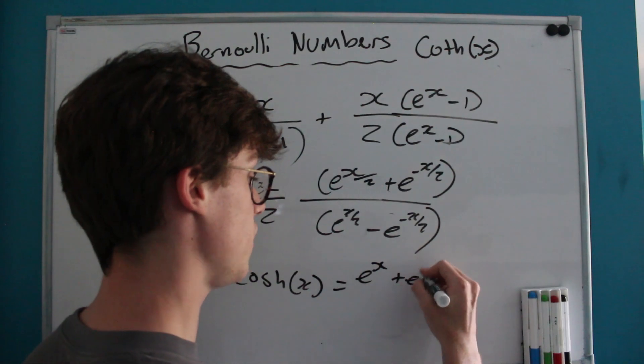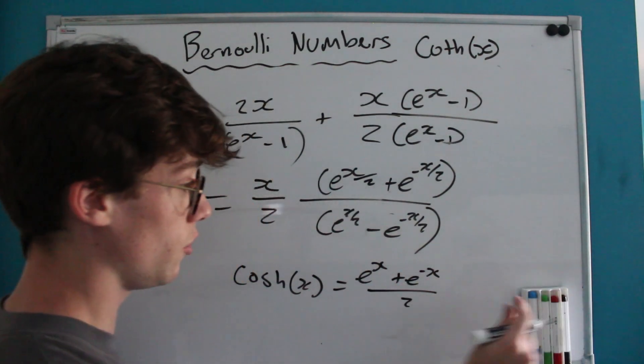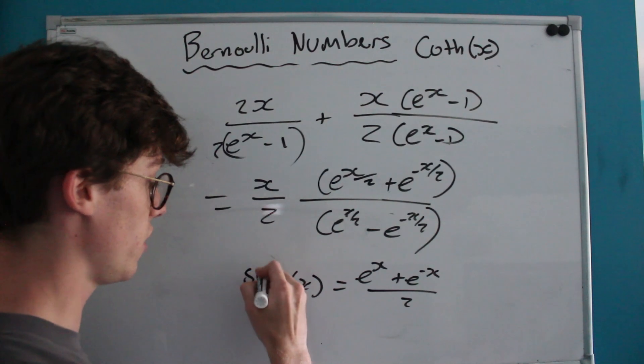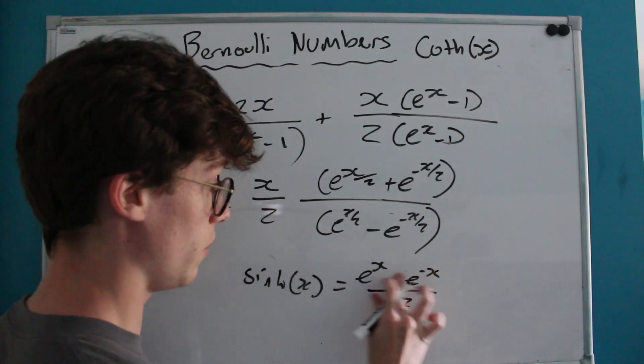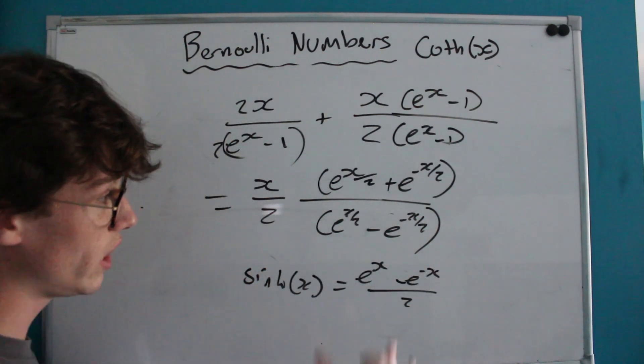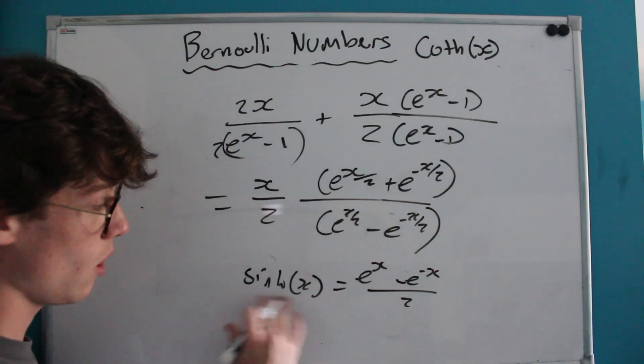As we all know, the cosh or hyperbolic cosine is e^X plus e^(-X) over 2, and sinh, which is hyperbolic sine, is the same but just with a negative sign here.